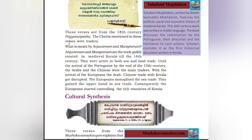Anjuvanna and Manigramam were trade guilds that existed in medieval Kerala. They were active in both sea and land trade until the 14th century and until the arrival of the Portuguese by the end of the 15th century. The Arabs and Chinese were the main traders, but with the arrival of the Europeans, Arab and Chinese trade with Kerala was disrupted. The Europeans gained the upper hand in sea trade and consequently started controlling the rich resources of Kerala. Tuhfat Al-Mujahidin, written by Shaykh Zainuddin Makhdum, is the political, social, and economic history of medieval Kerala; this 16th century work written in Arabic discusses Portuguese colonization, their atrocities, and resistance to such actions. Scholars consider it the first historical document written in Kerala.